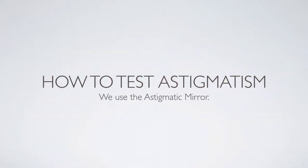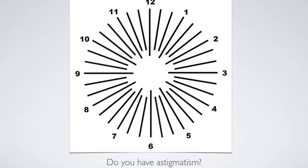How do you test for astigmatism? The old-fashioned test is looking at this diagram here — you may have seen this before. If you look at it, all the lines would be equally black. There would be no lines that have shadows, no lines that are darker, and there should be no sections that are gray.